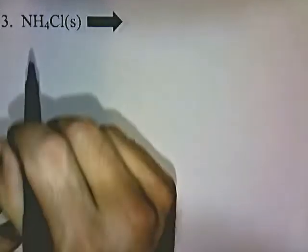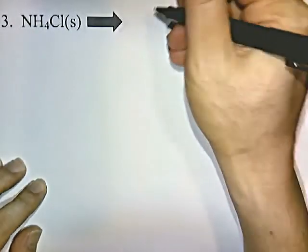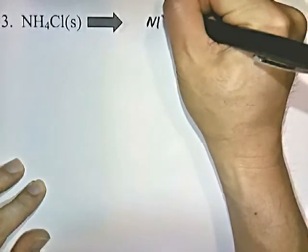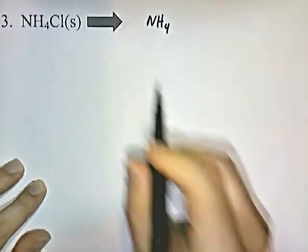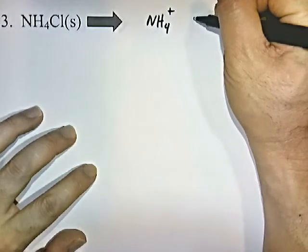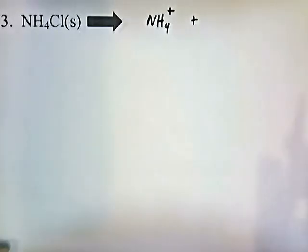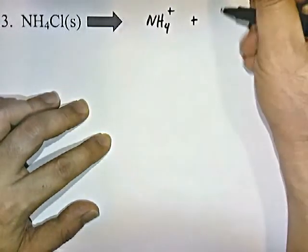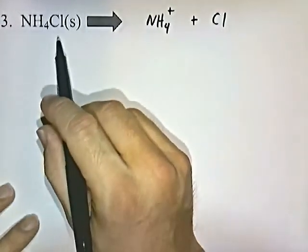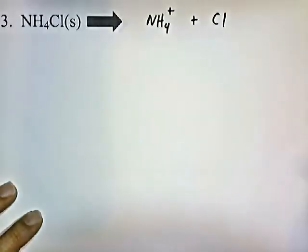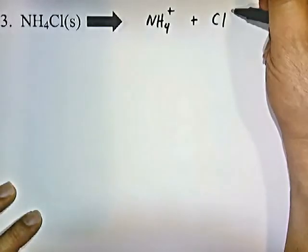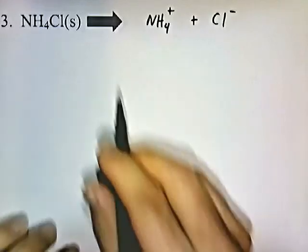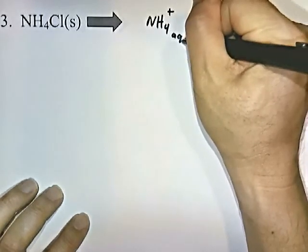NH4Cl: you should recognize NH4 as ammonium. You should have memorized that NH4 has a plus charge. These polyatomic ions are on the solubility rules list from Lecture 48, so you can look there if you can't remember them. Cl is a group 7A element, or group 17 element — the oxidation number of the halogens is negative 1. And there's your answer: NH4Cl (aq).